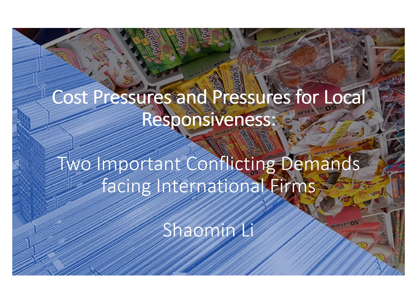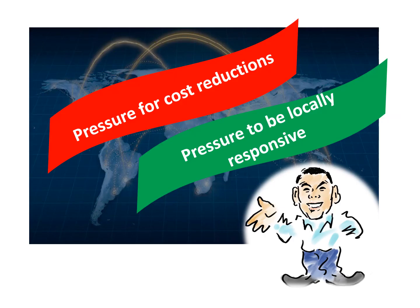What is the pressure for cost reduction? Firms competing globally usually face two types of competitive pressure: the pressure for cost reductions and the pressure to be locally responsive.